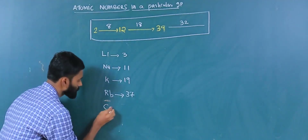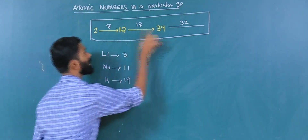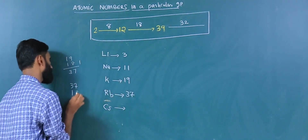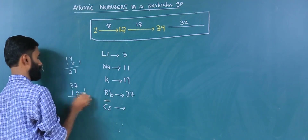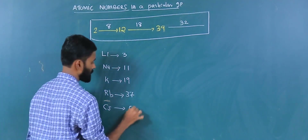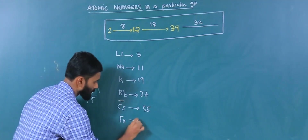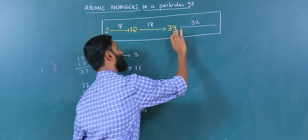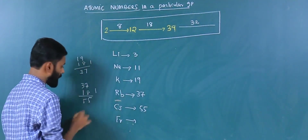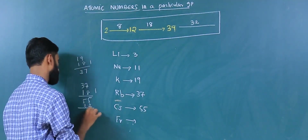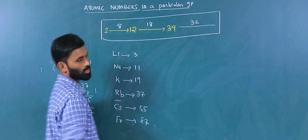Then cesium. Cesium atomic number: 37 plus 18 equals 55. Cesium atomic number is 55. And francium: after 55, we add 32. So 55 plus 32 equals 87. Francium atomic number is 87.